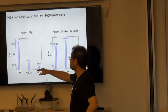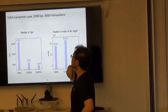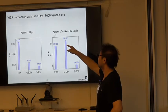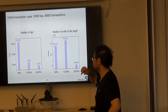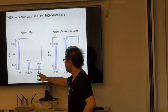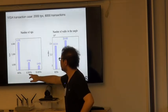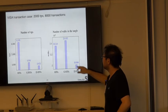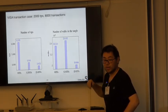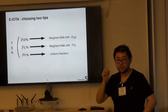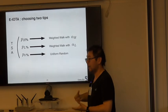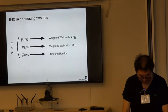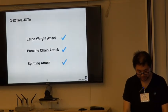Here we show the number of tips. This is a simulation in a real Visa transactions case, with 2,000 tips per second and up to 8,000 transactions. JALTA and GALATA have a lower number of tips left behind in the Tangle. Also in GALATA, the number of random walks is reduced because random walks cost a lot. Thanks a lot.